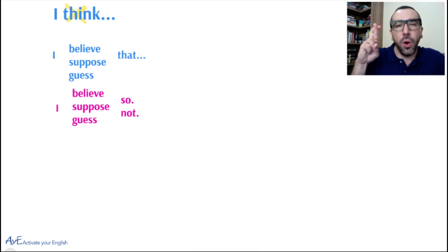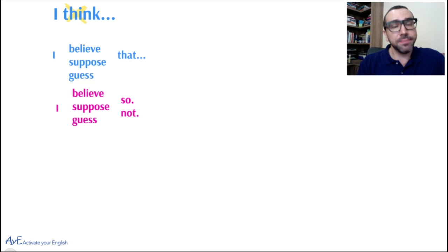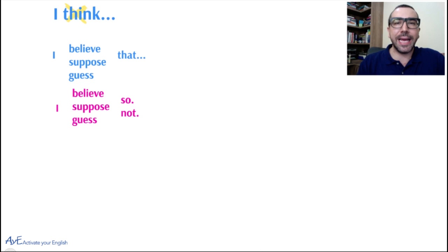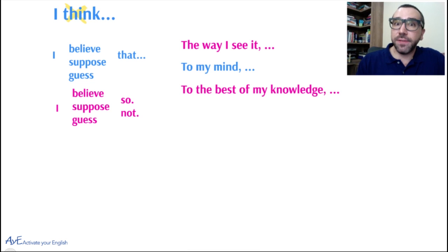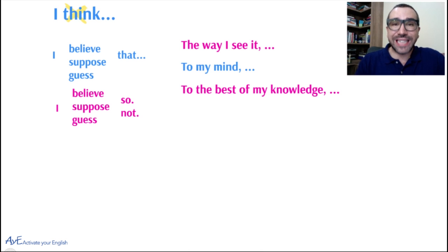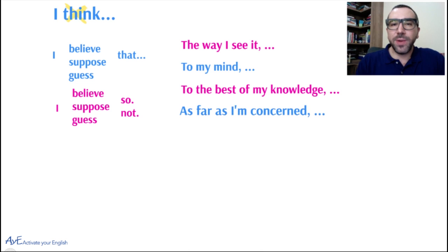'I hope so' means you're more like hoping — you're not saying what you think. If you disagree: I believe not, I suppose not, I guess not. Other alternatives: the way I see it, to my mind — I really like using that one. To the best of my knowledge is extremely formal, so use it in a formal setting. And the one I really like is: as far as I'm concerned.